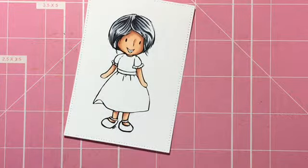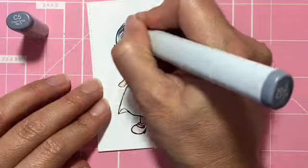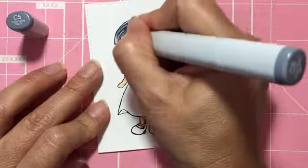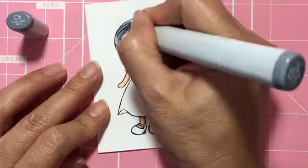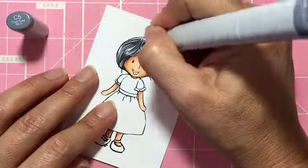Then I am going to go back down to C5 and I'm going to pull out some of that color I just put down and cover a little bit of a larger area of her hair.